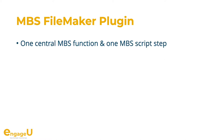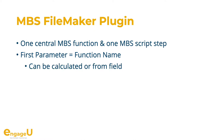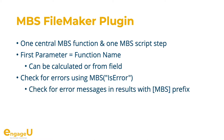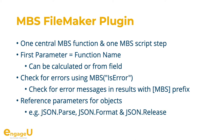Our plugin has one central function which is also available as a script step. Imagine how the calculation dialog would look if we added all 6,000 functions there. The first parameter to our function is the actual function name, and this can come from a calculation or field. Please check for errors, as every function may fail — we keep error state and you can query this with the isError function. We use reference numbers for parameters; for example, if you pass a JSON you get back a number for that object, which is then passed to the format function, and finally you can release it.